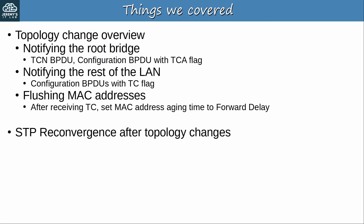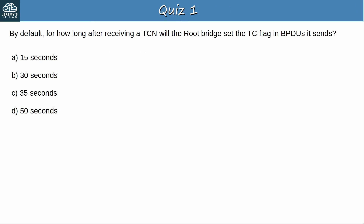Quiz question 1: By default, for how long after receiving a TCN will the root bridge set the TC flag in BPDUs it sends? The answer is C — 35 seconds. After receiving a TCN, the root bridge will set the TC flag in BPDUs it sends for the duration of the max age timer plus the forward delay timer, so 35 seconds by default.